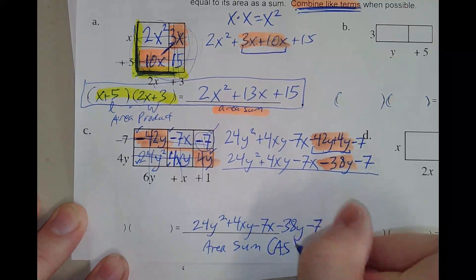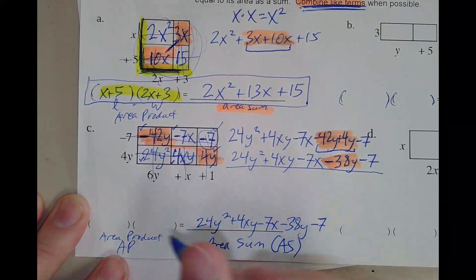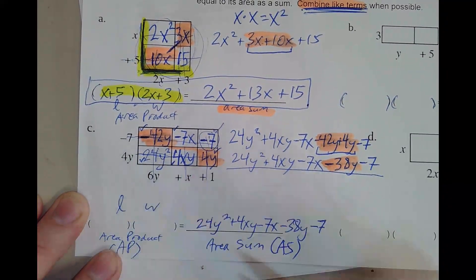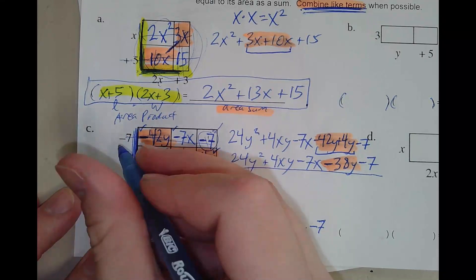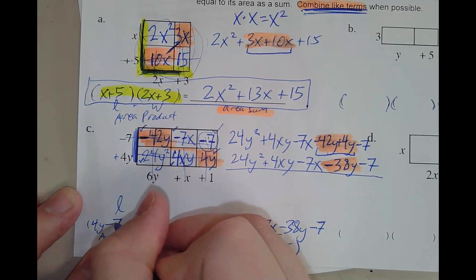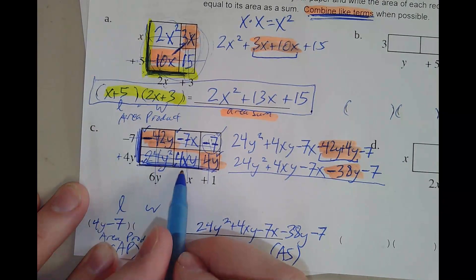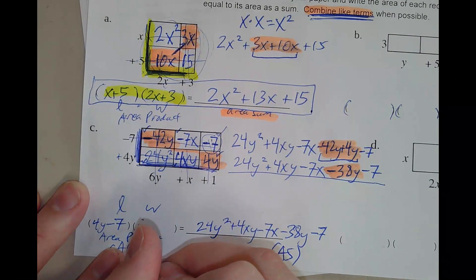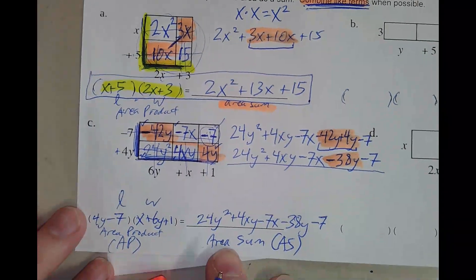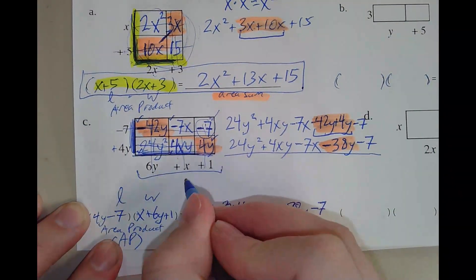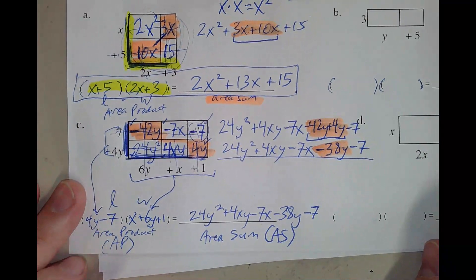The area product is length times width. The length is 4y minus 7, and the width — you can write it in any order — is x plus 6y plus 1. Or 6y plus x plus 1. You can draw an arrow to show where these numbers came from if you're looking back at your notes.